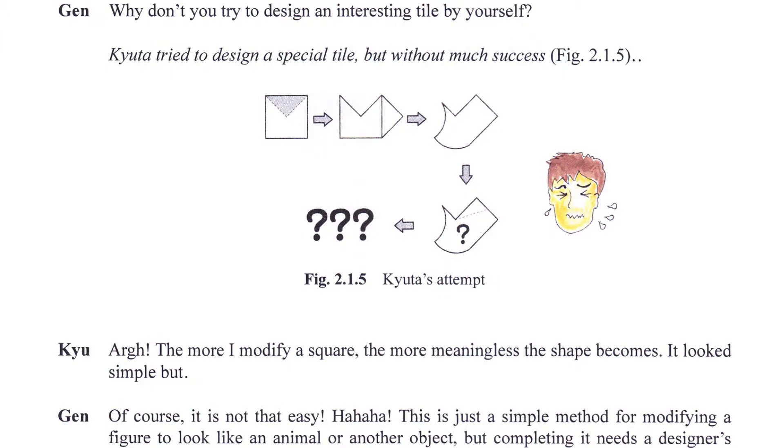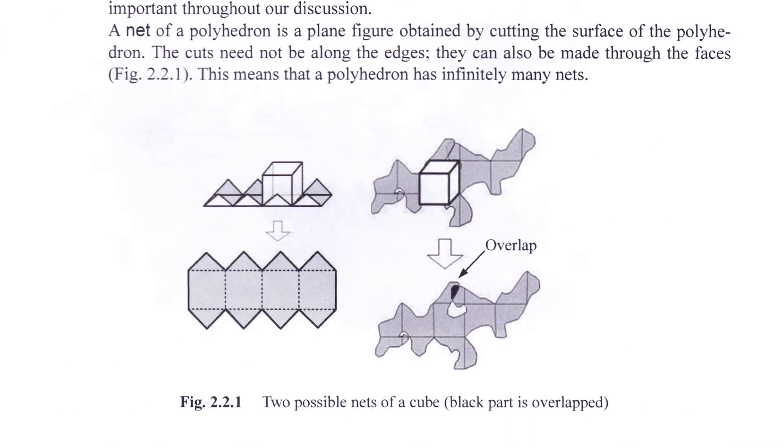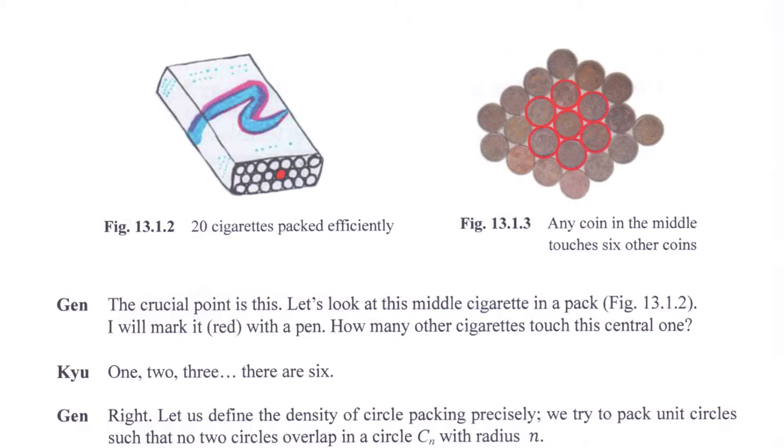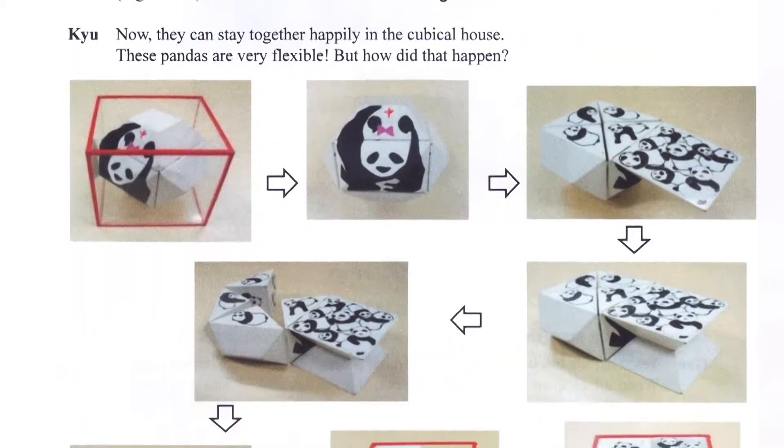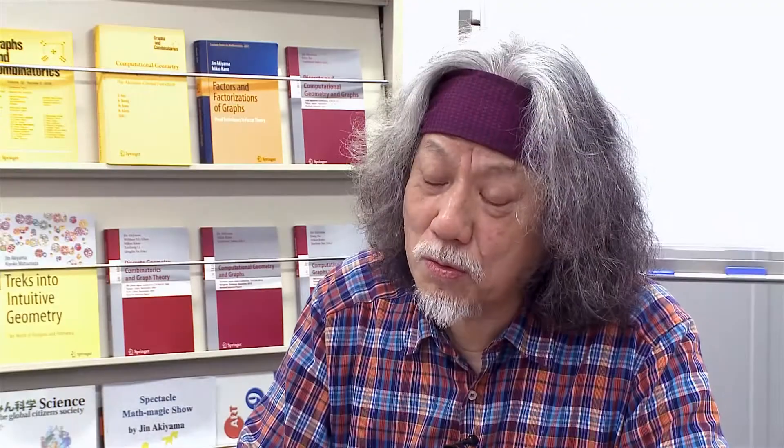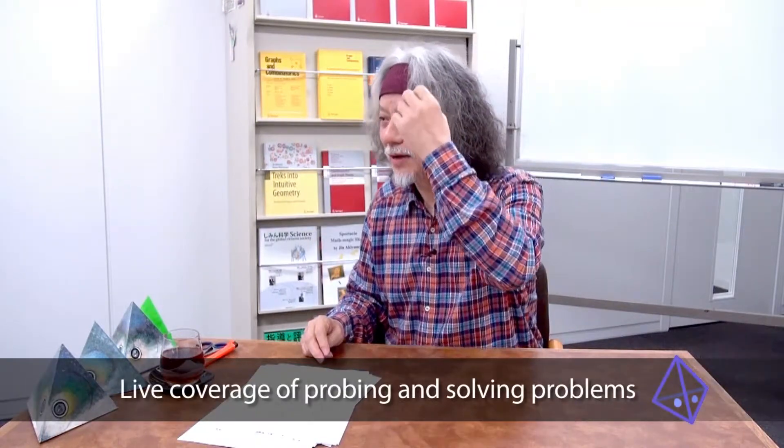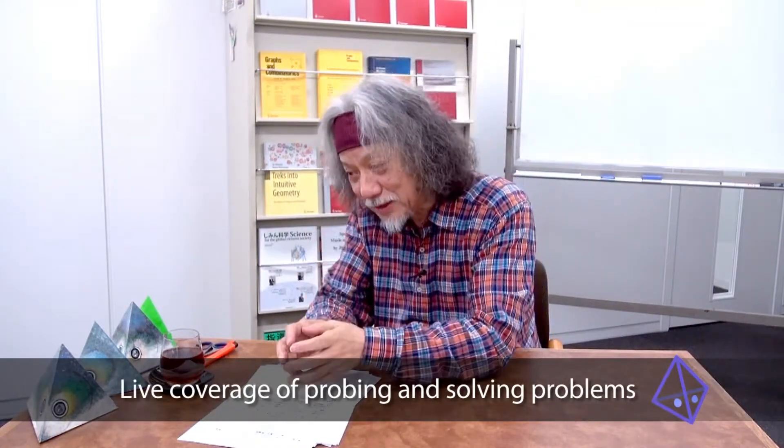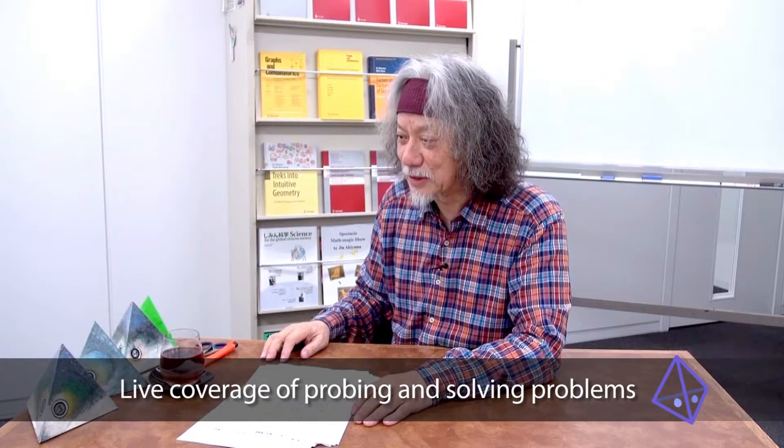This book also discusses trial and error, where one starts with the wrong concept, then goes back to square one and starts over again with a different method. This book discusses such issues. There's basically no other book like it. The book covers both the aspect of finding problems and the results of solving the problems in a lively way.